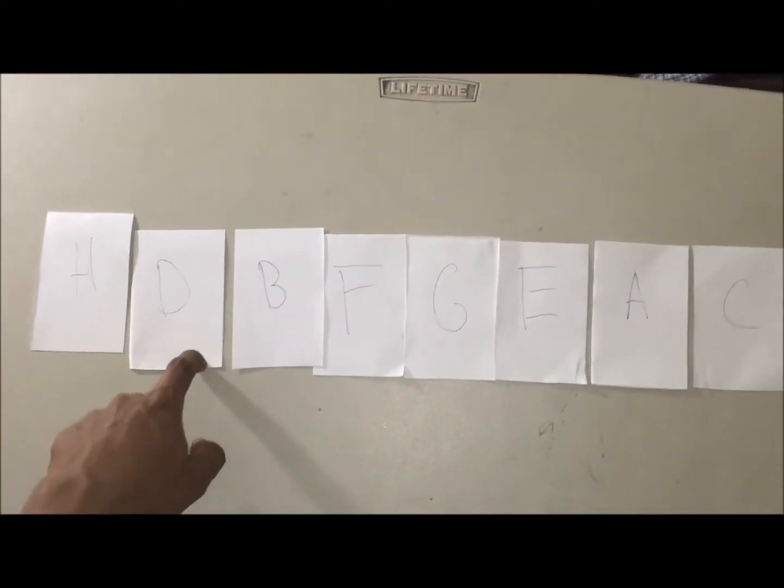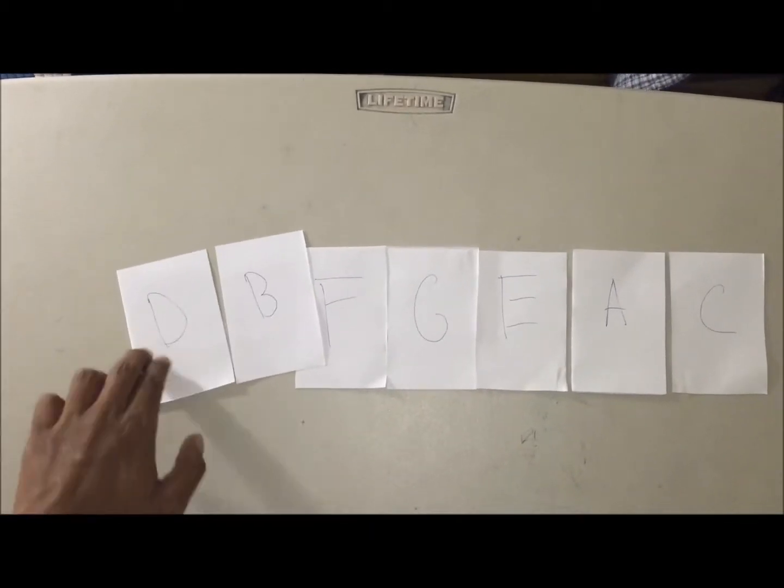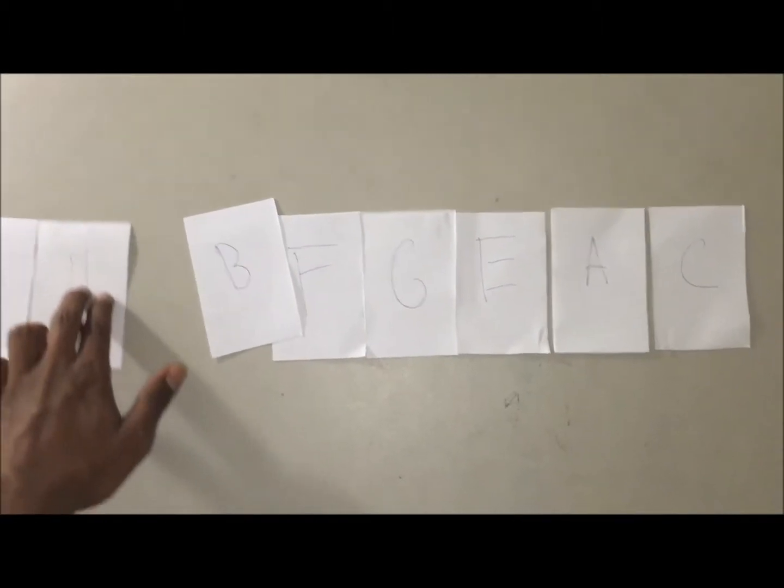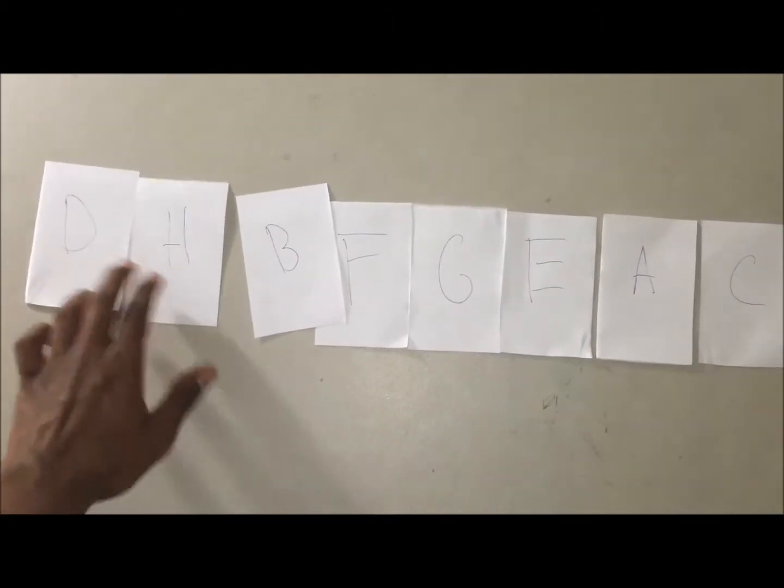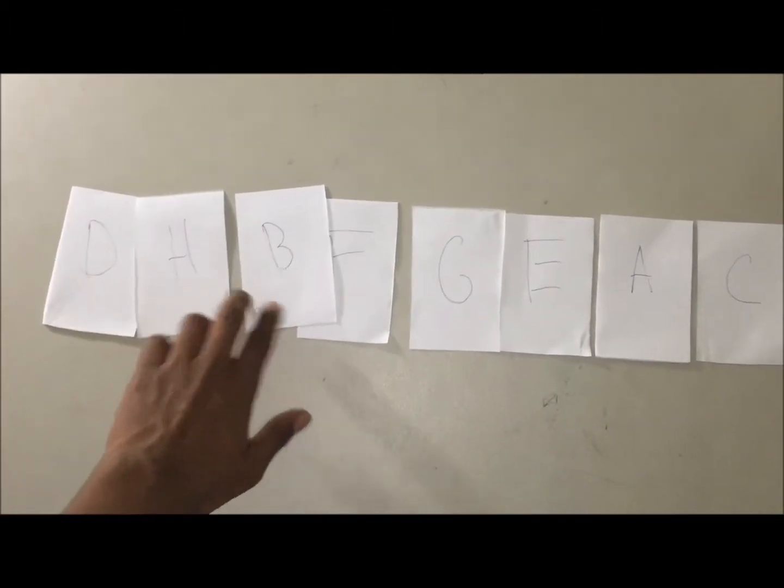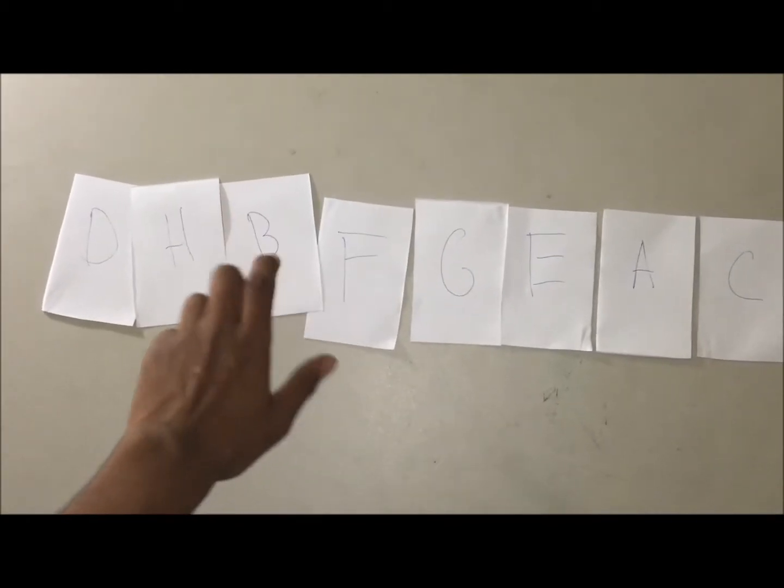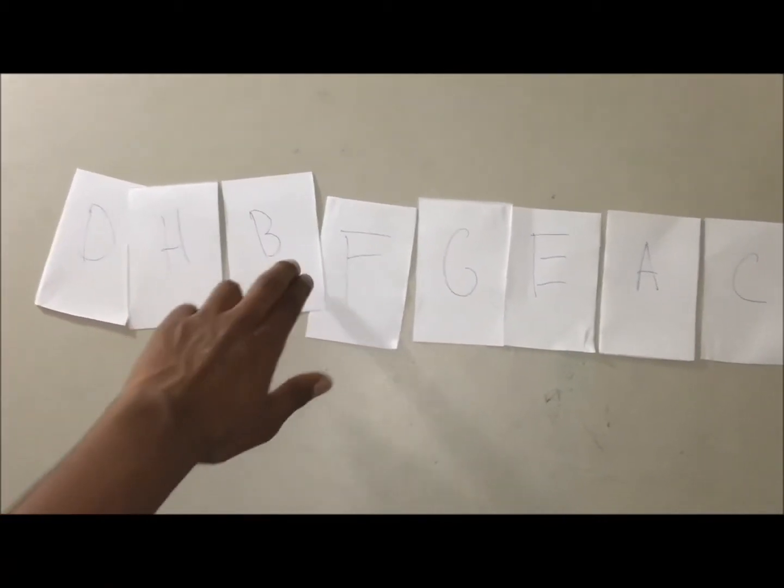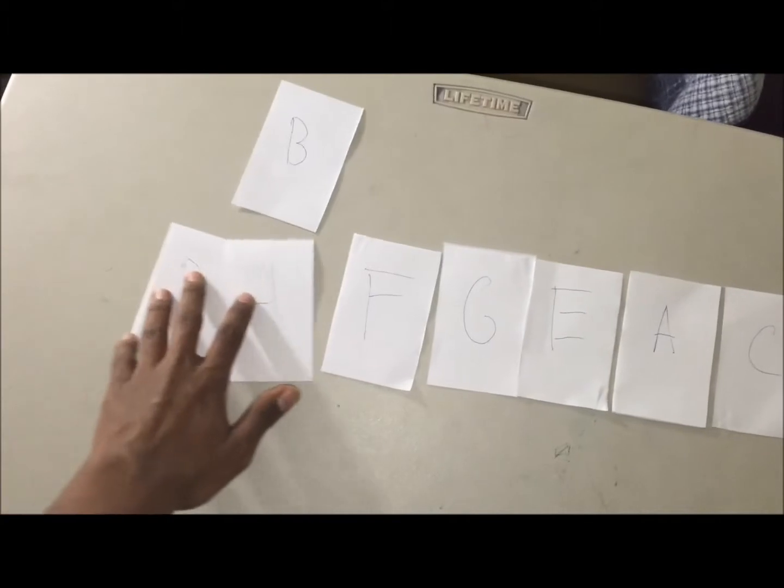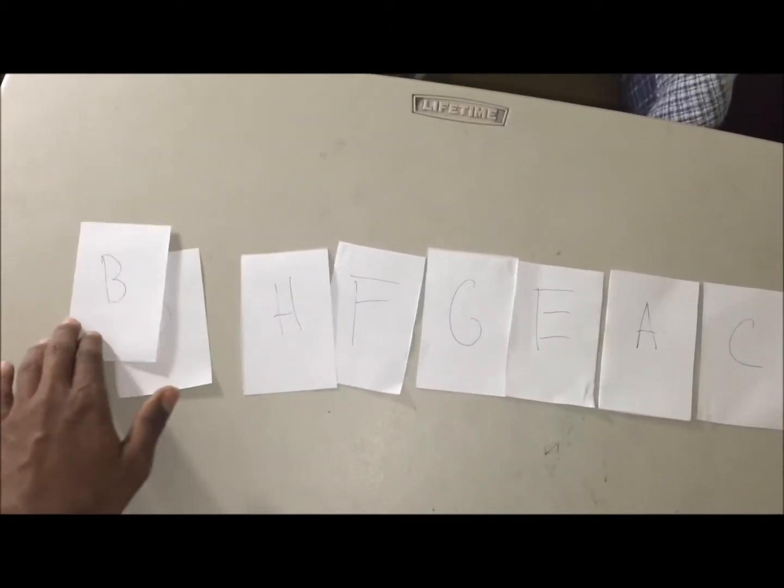H and D, are they in order? No. So let's switch this. Then we're going to B, right? Okay. We know that B comes before D, and D and H are already sorted. I can take B out, slide these two over, and bring B back in.